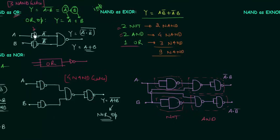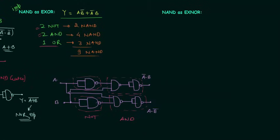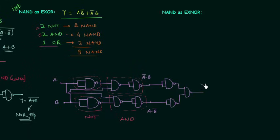To implement one OR gate we require three NAND gates. First we will use two NAND gates as inverters and then use the third NAND gate to get the output of the OR gate. The final output Y is equal to A and B complement or A complement and B.